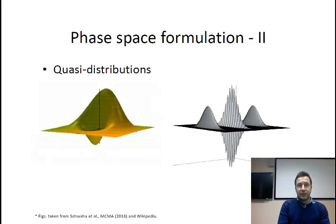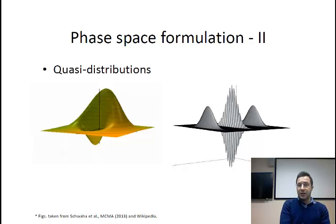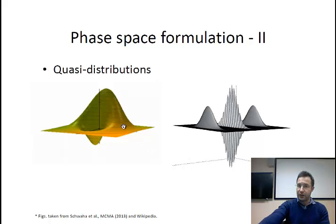To go ahead, we may mention that these quasi-distribution functions, despite being used as distribution functions when you want to calculate measurable variables, are not properly distribution functions. Indeed, here you can find two pictures of two different Wigner functions, and you can see that both of them have negative values.